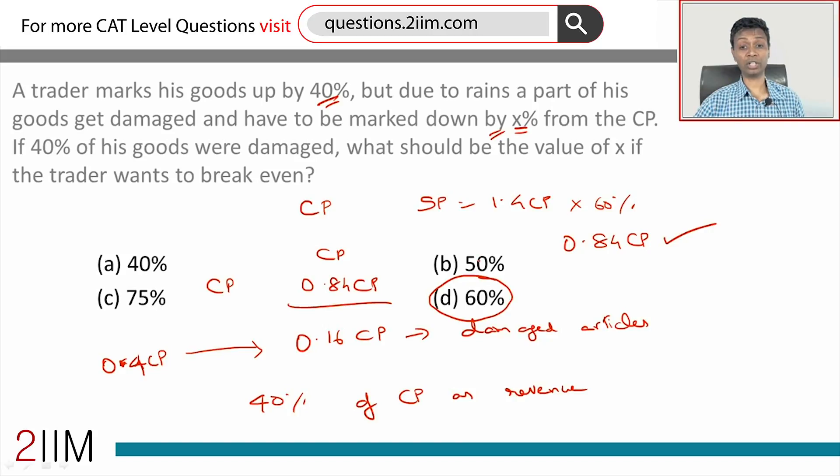60% of the goods he marks up by 40%, the remaining 40% he marks down by 60% to make no profit no loss. The question is how much should he mark down the remaining by in order to break even. He should mark it down by 60%, selling it at 40% of original cost price.